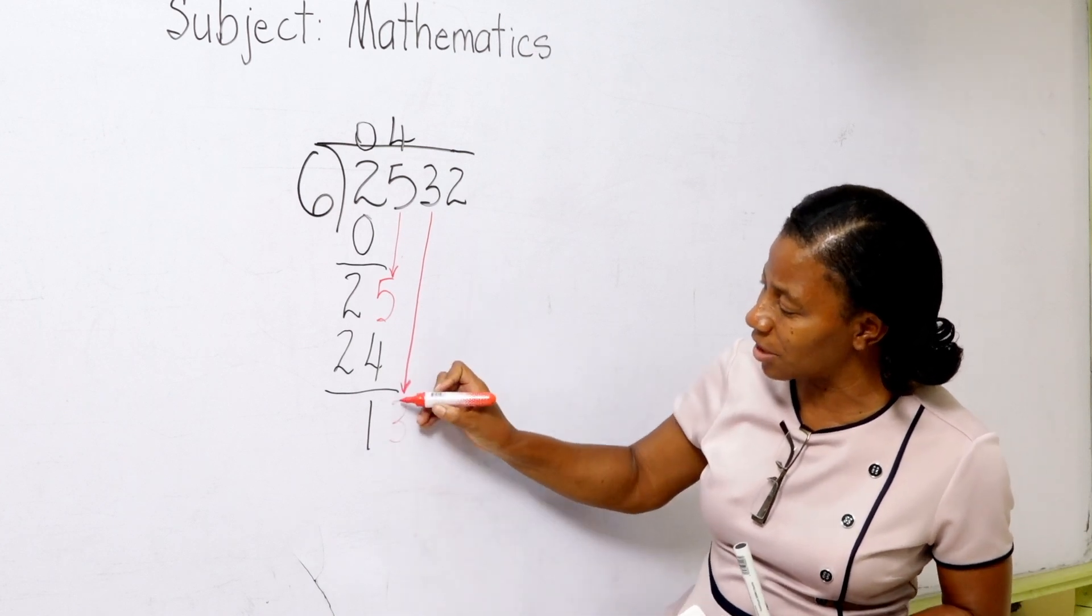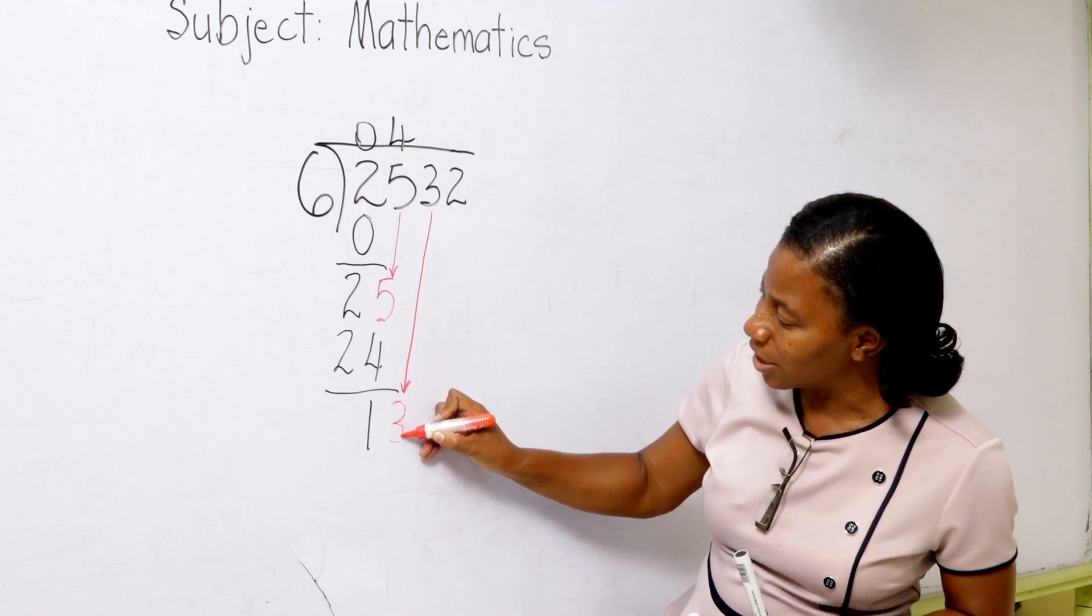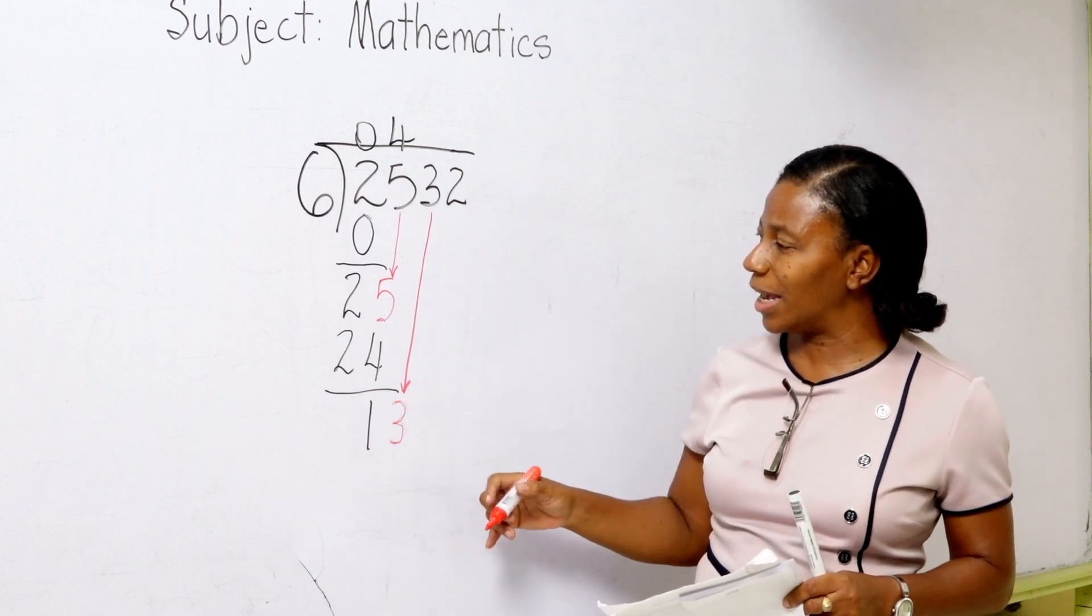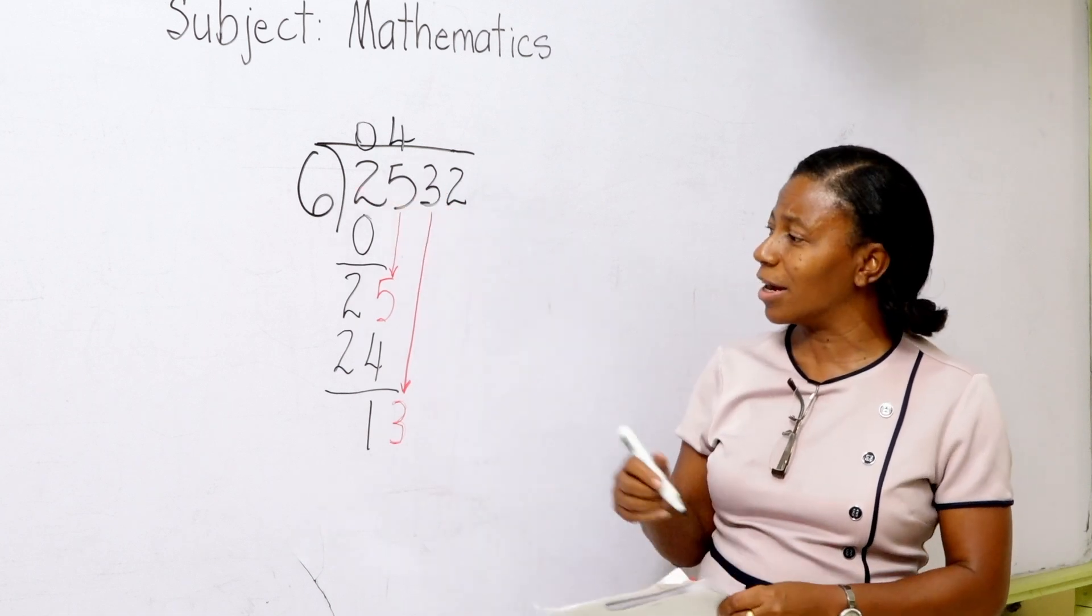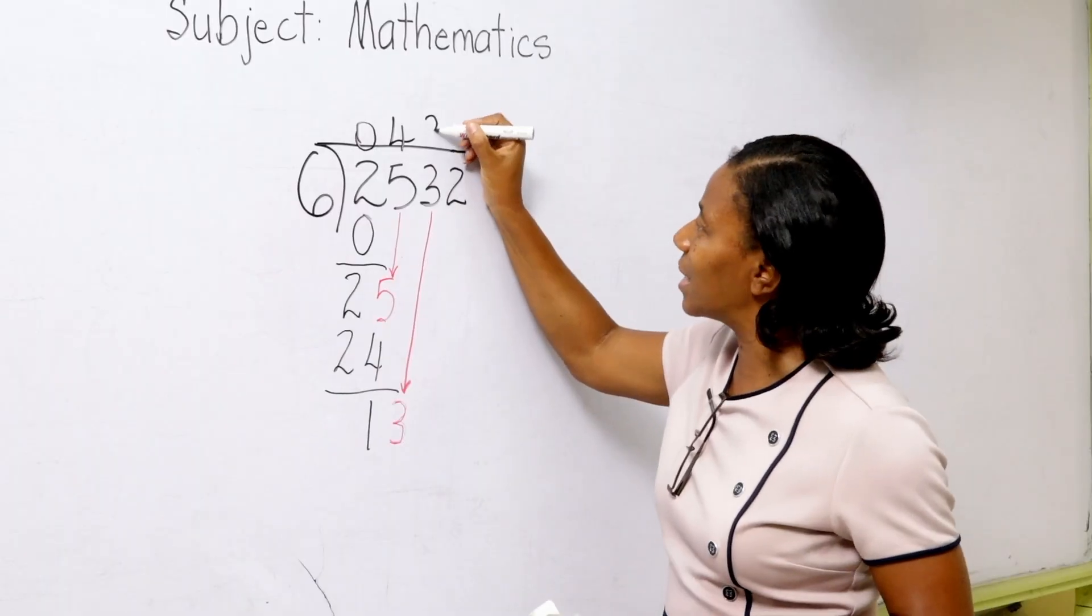And it becomes 13. You are still right. So it becomes 13. And with the 13 that we have there now, we are going to divide the 13 by the 6. And we are going to get how much? 2 times. 2 times. Excellent.